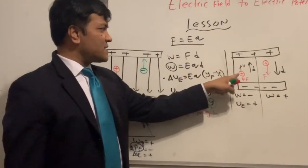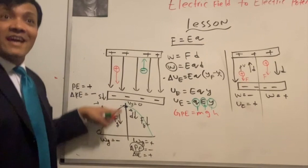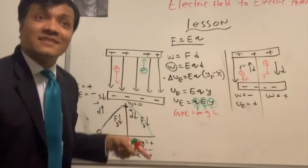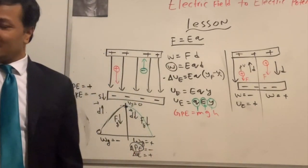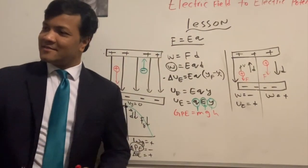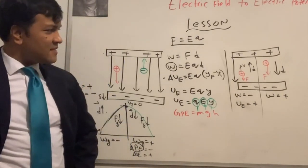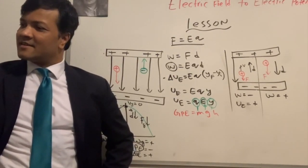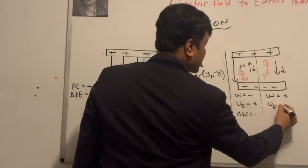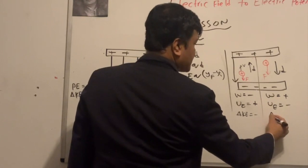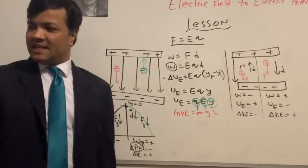Electric potential energy is positive when the charge is near the positive plate — higher position means more energy stored, just like a ball at the top of a hill. Once it comes down, kinetic energy increases. The student connects this to the work-kinetic energy theorem discussed earlier.